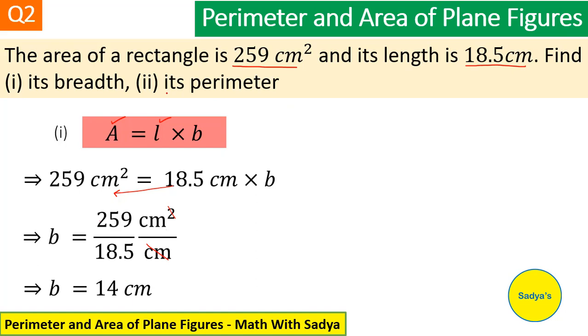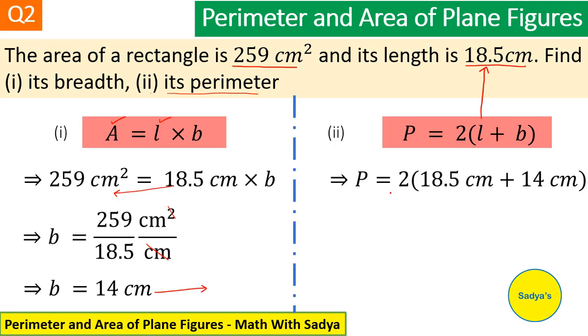In the second part, we have to find the perimeter and perimeter of a rectangle is equal to 2 times length plus breadth. Plug in the values of length and breadth. Length is 18.5 cm and breadth is 14 cm. Put it in the formula. So, we get perimeter is equal to 2 times 18.5 cm plus 14 cm.